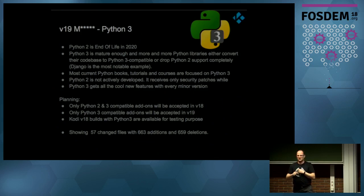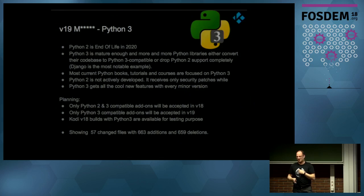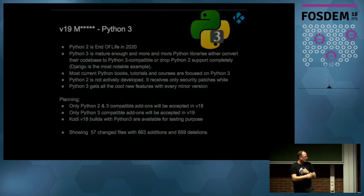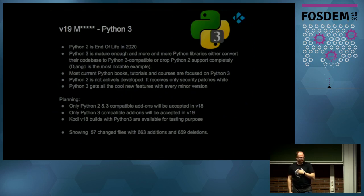We're already doing a Python 3 build now so you can test your add-ons to make them Python 2 and 3 compatible so they just keep working. From version 19 we will only accept Python 3 add-ons — the rest will be auto-disabled and just stop working. We'll try to auto-detect if an add-on is Python 3 compatible; otherwise you get script errors. It's actually quite a small change: only 57 changed files and 700 lines changed to upgrade Python, but the main challenge was finding all those hooks in the code because it's so entangled everywhere.